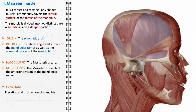Clinically, the masseter muscle is significant for several reasons. It can be involved in disorders such as bruxism, or teeth grinding, which can lead to hypertrophy of the muscle, affecting facial appearance and causing dental issues. Dysfunction in the masseter can also contribute to temporomandibular joint disorders, leading to pain and functional limitations in jaw movement. The size and strength of the masseter can vary significantly among individuals, affecting facial contours, and its prominence is especially noticeable when clenched during strong emotional expressions.